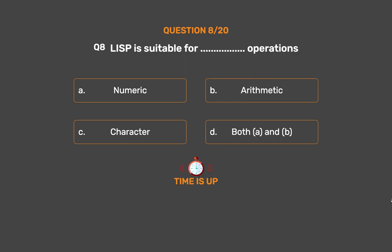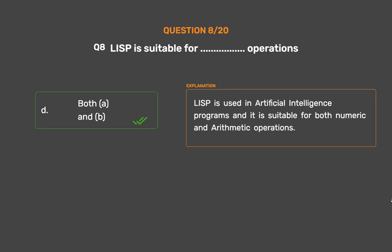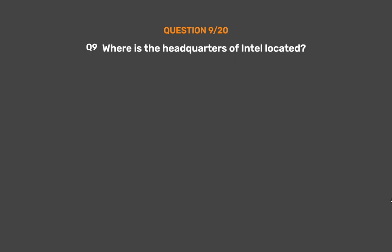The correct answer is Option D: Both A and B. Lisp is used in artificial intelligence programs and it is suitable for both numeric and arithmetic operations.